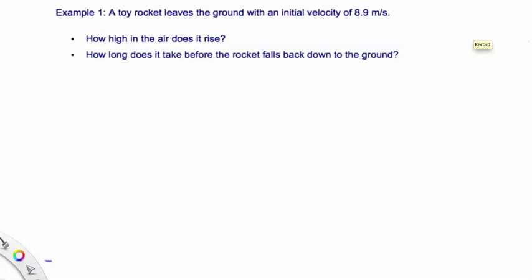Let's look at this practice problem. It says a toy rocket leaves the ground with an initial velocity of 8.9 meters per second. You're asked to find out how high in the air does it rise, and how long does it take before the rocket falls back down to the ground.